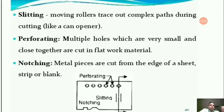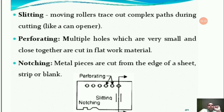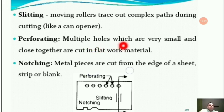Here are more sheet metal operations important for MCQ purposes. Slitting uses moving rollers to trace out cuts in complex paths during cutting, like a can opener — essentially simply cutting through material. Perforating means multiple small holes that are very close together are cut in flat work material.